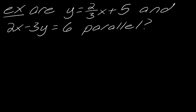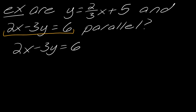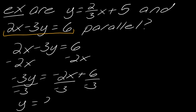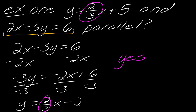Now what I want to talk about is how to determine if two lines are actually parallel. I have this first line: y equals two-thirds x plus five, and then this other line. Just by looking at this second line, I can't tell what the slope is, so I'm going to put it into slope-intercept form by solving for y. I'll subtract off the two x to get negative three y equals negative two x plus six, then divide both sides by negative three to get y equals two-thirds x minus two. The slopes are both two-thirds, so yes, these are indeed parallel.